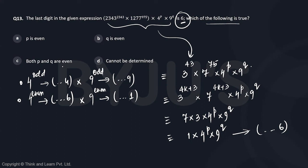And if both p and q are even, that is also not necessarily true because they both can be odd as well. So the answer turns out to be cannot be determined. The correct option should have been: p and q, they both are either odd or they are going to be both even.